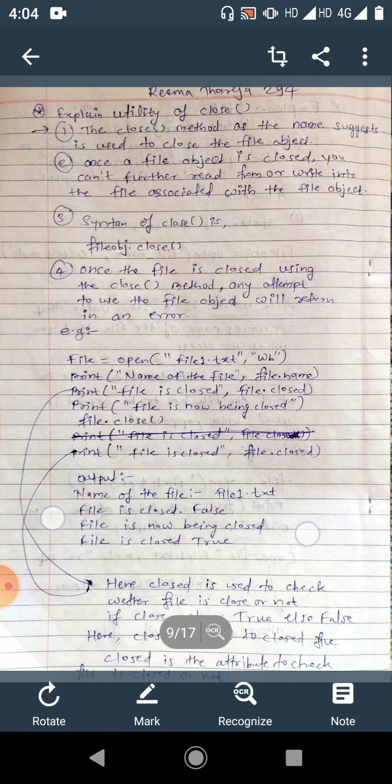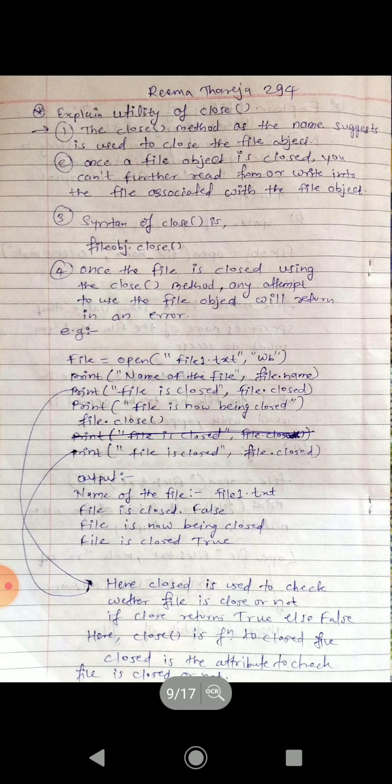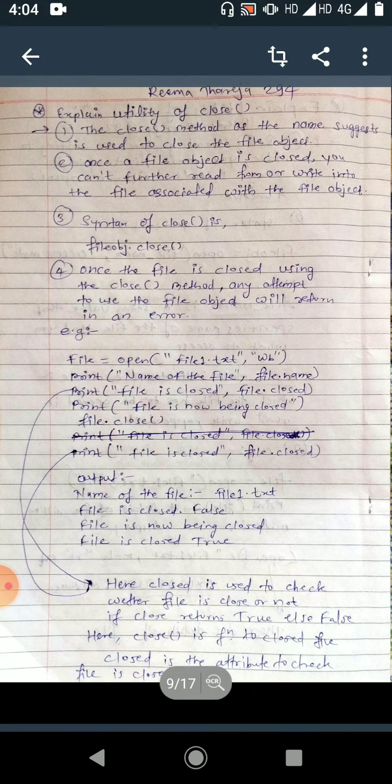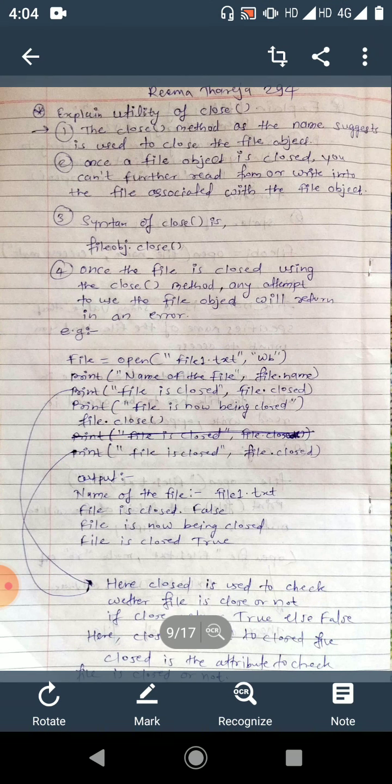Closed is used to check whether the file is closed or not. If closed returns true, else false. Closed, that is c-l-o-s-e-d, is the attribute, and close is a function. Both are not the same thing. One returns true or false, another closes the file. Close is the attribute to check if the file is closed or not.